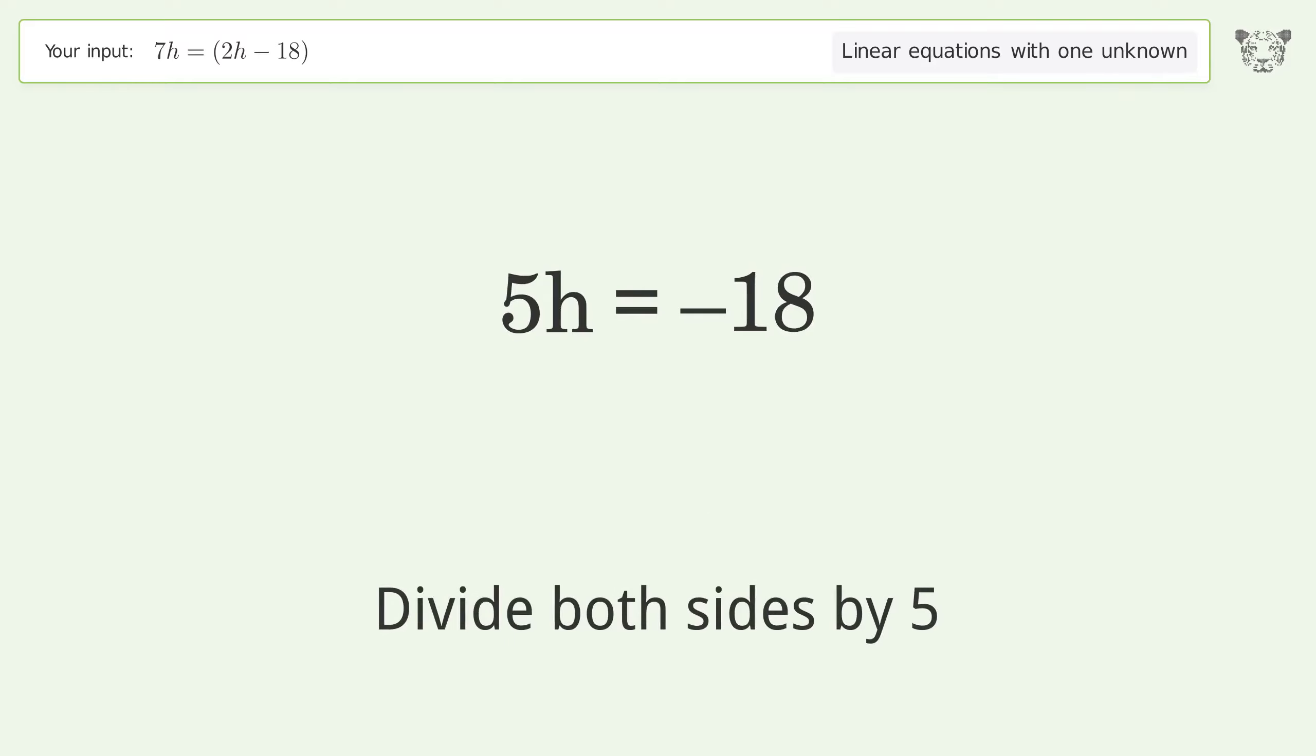Divide both sides by 5. Simplify the fraction. And so the final result is h equals negative 18 over 5.